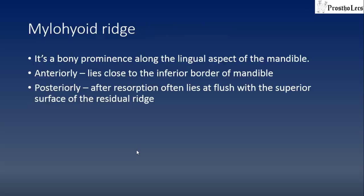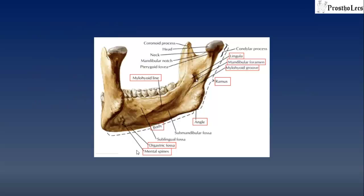The mylohyoid ridge is a bony prominence along the lingual aspect of the mandible. Anteriorly, it lies close to the inferior border of the mandible. Posteriorly, after a certain amount of resorption, it lies almost flush with the superior surface of the residual ridge. In this picture showing the lingual view of the mandible, you can see the mylohyoid line running downward in the anterior region to upward in the posterior region.